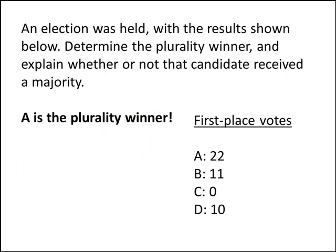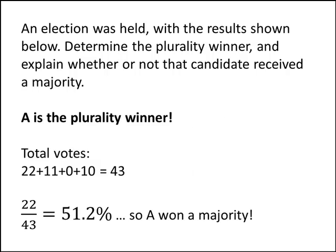Now that we've got the first place vote totals, it's easy to figure out that A is the plurality winner, because all we have to do is find the candidate that received the most first place votes. If we want to find out whether or not A received a majority, we add up the total votes: 22 plus 11 plus 0 plus 10, which gives us 43. Take A's total of 22 and divide by 43, we get 51.2%, and since that's more than 50%, we know that A not only was the plurality winner, but also received a majority.